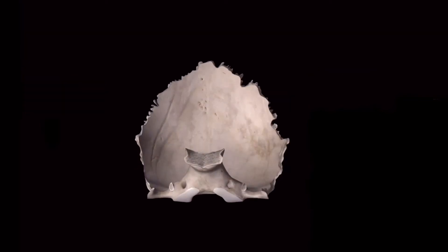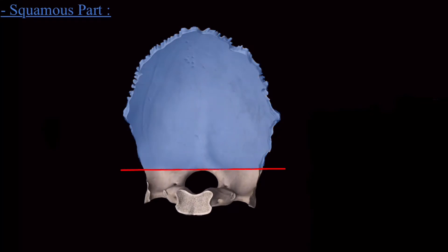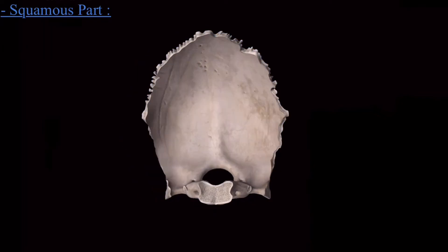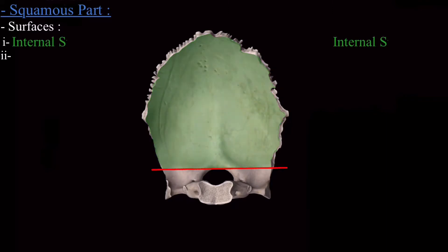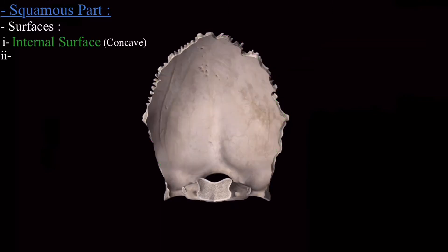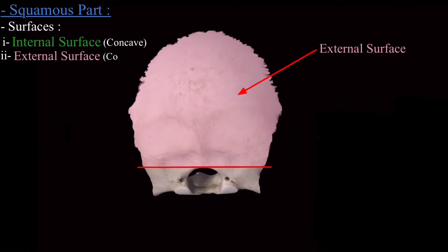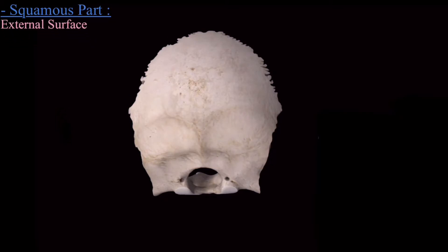We will begin with the squamous part of the occipital bone. The squamous part has two surfaces, four borders, and three angles. The two surfaces are the internal surface, which is concave in nature, and the external surface, which is convex in nature. First I will discuss the external surface.